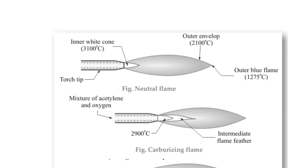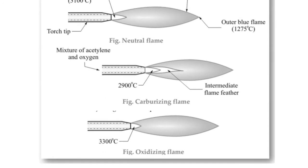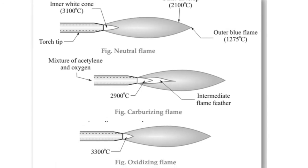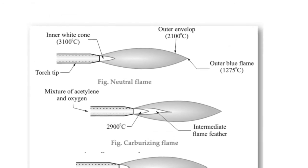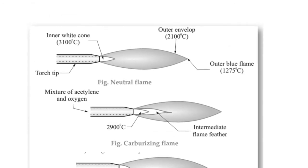The second type is carburizing flame, in which there is more fuel. The third type is oxidizing flame, in which oxygen is more compared to fuel. Each flame gives a different temperature. The maximum temperature is obtained in oxidizing flame, around 3300 degrees Celsius. In carburizing flame, around 2900 degrees Celsius, and in neutral flame, around 3100 degrees Celsius.